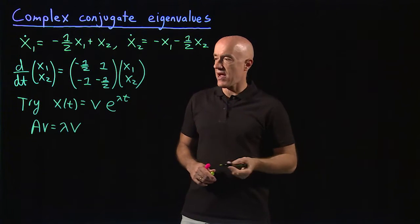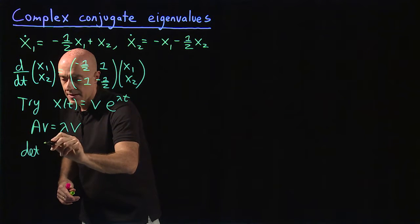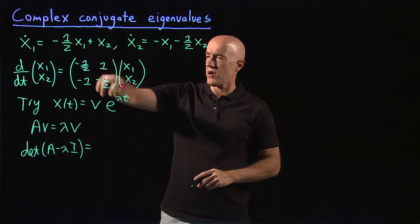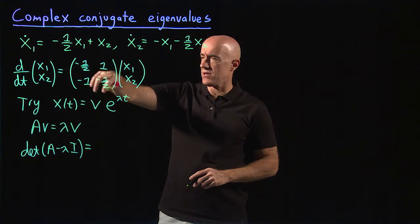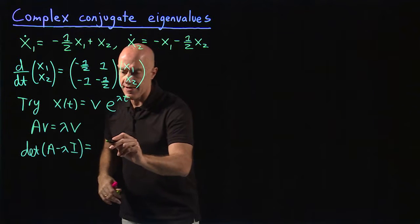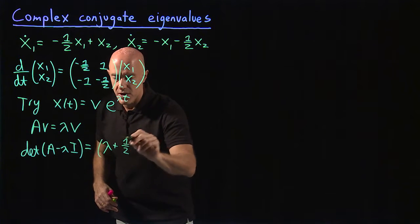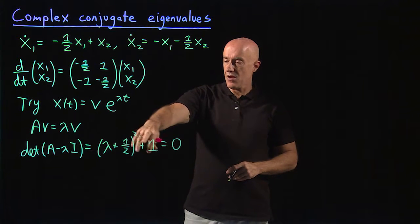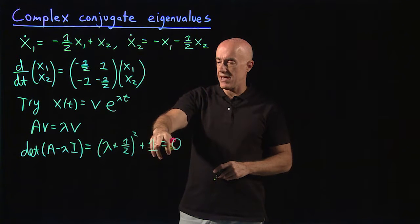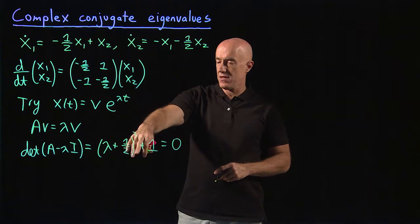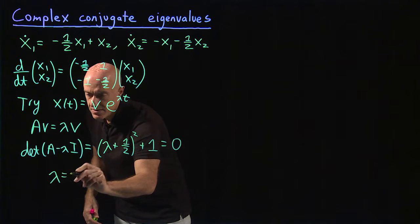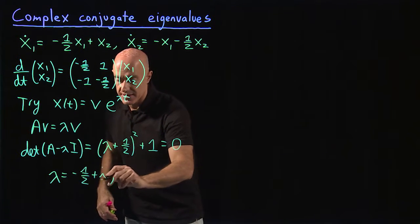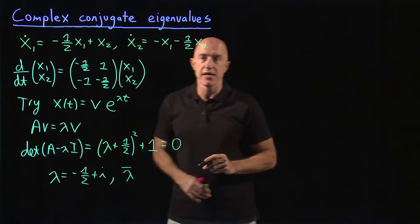The eigenvalues are computed from the characteristic equation, the determinant of A minus λI. Because the diagonal elements are equal, we subtract λ from the diagonal and compute the determinant. We get (λ + 1/2)² + 1 = 0. Bringing the −1 to the right and taking the square root gives i, so λ = −1/2 + i, and also λ = −1/2 − i, which is just the complex conjugate of the first eigenvalue.